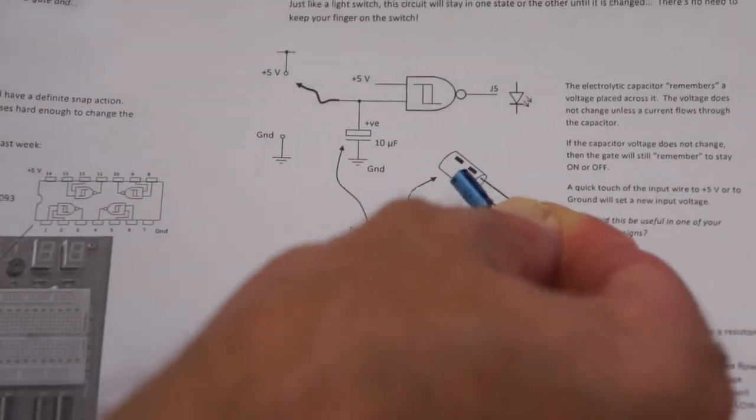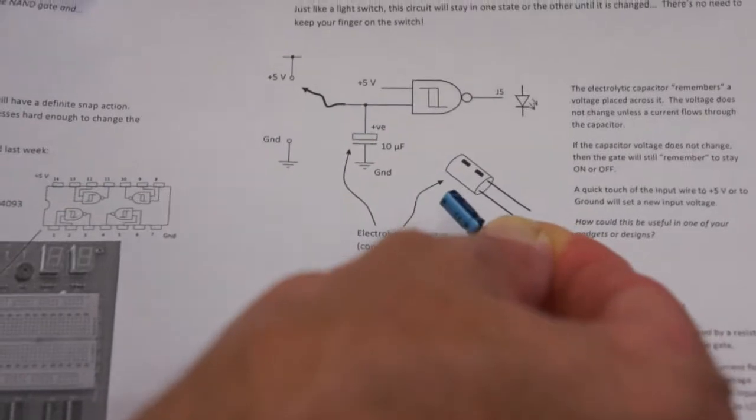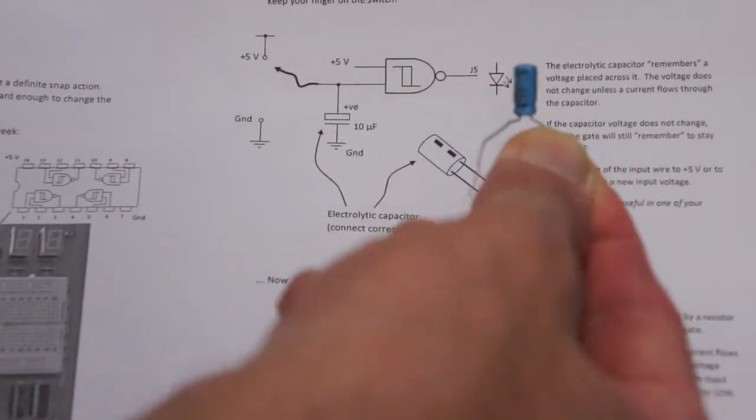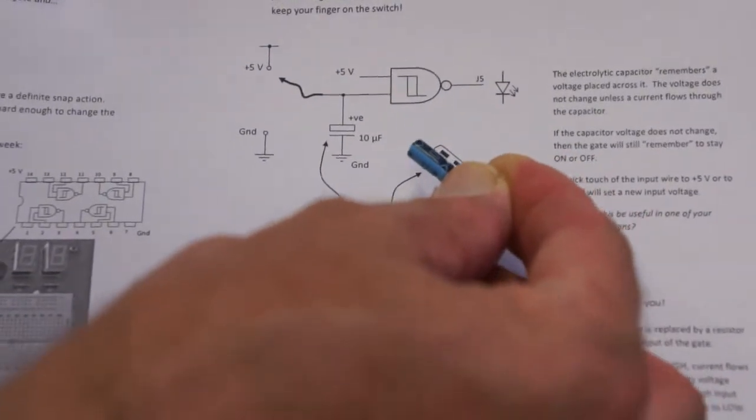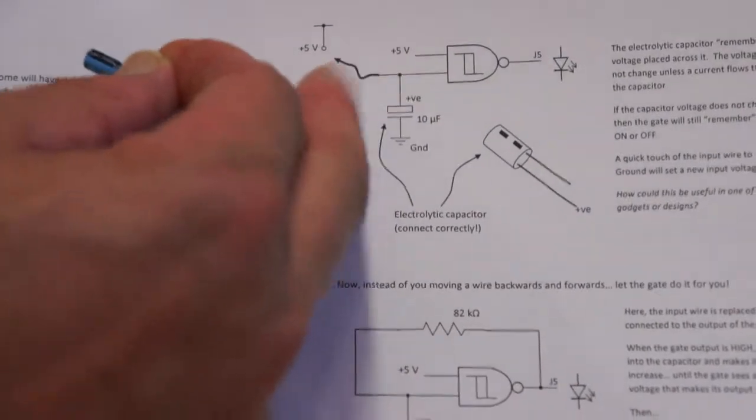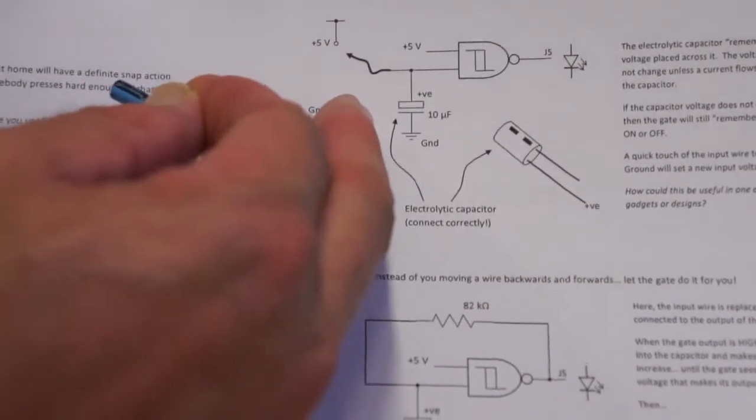It's got a black bar on one side with some minus signs and that's to show you which lead is negative. The other lead is longer and it's positive. We need to connect it the right way around. And on the symbol, the box is positive and the line is a minus sign.